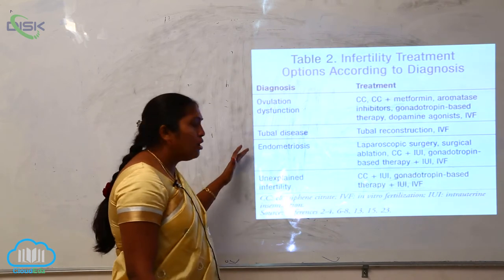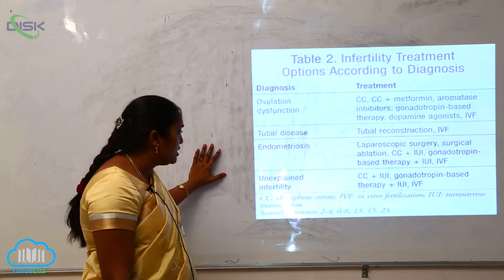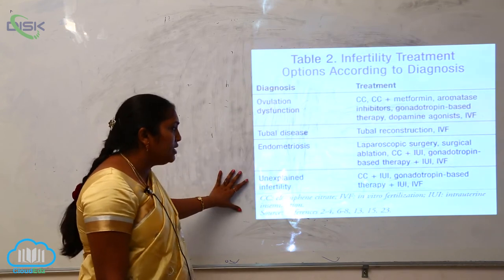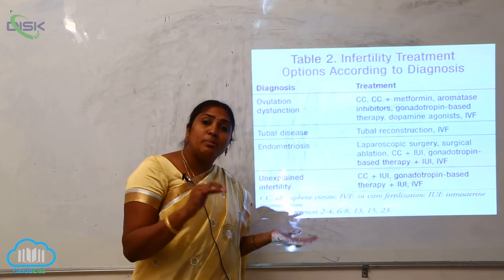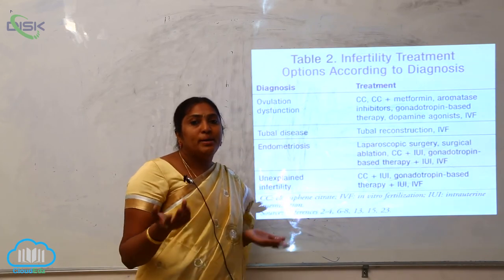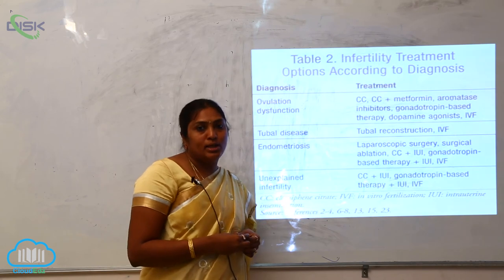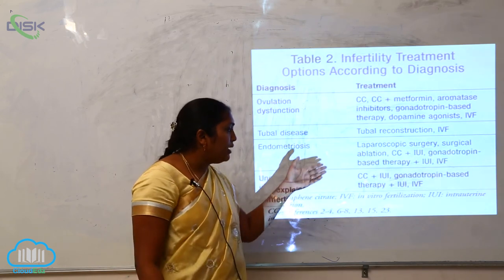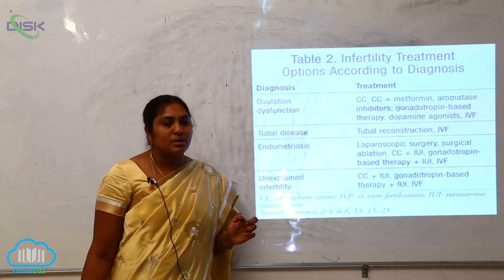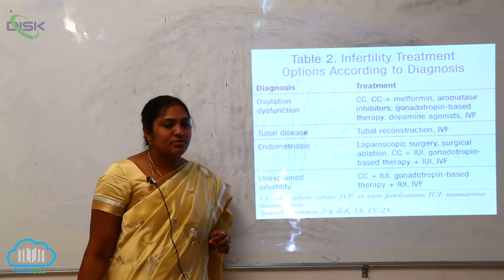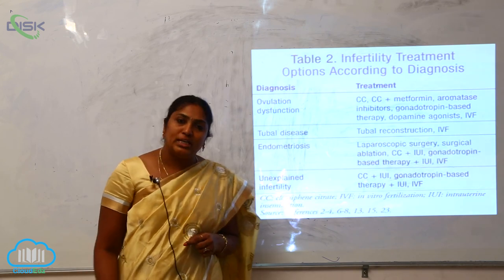These are the various types of diagnoses for infertility. Unexplained infertility refers to cases where patients are healthy but are not conceiving and the cause is unknown. For unexplained infertility, the treatments are gonadotropin-based therapies and IVF — in vitro fertilization.